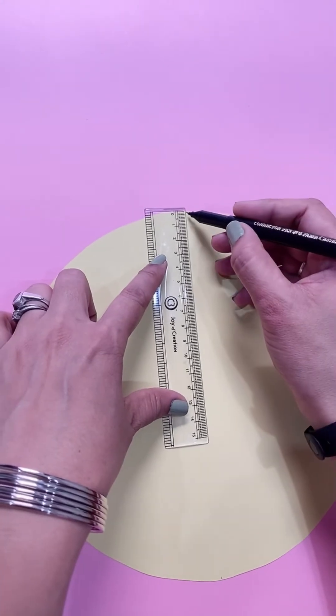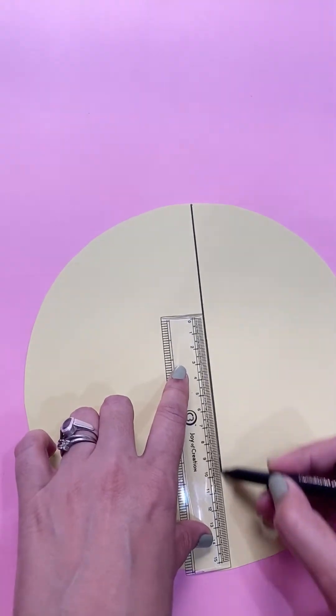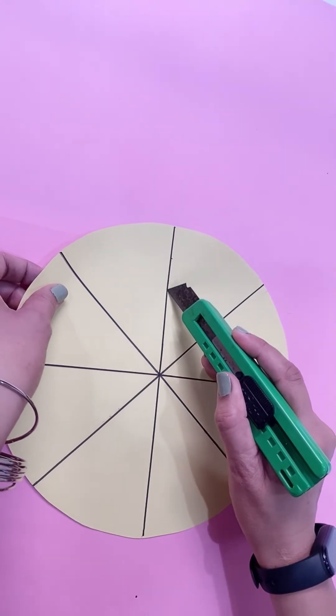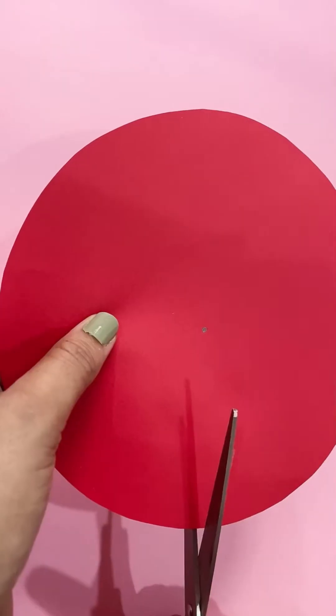To make this fraction wheel, cut two circles of any size, one big and one small. Divide the big circle into eight equal parts like this. Leaving one inch, cut the big circle like this.